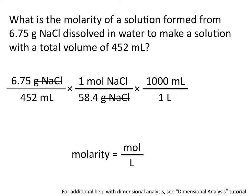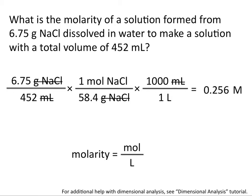We know that 1,000 milliliters are in one liter. By writing 1,000 milliliters on the top, this allows us to cancel out milliliters, and leaves us with units of moles on the top and liters on the bottom, which is exactly what we're looking for when we're trying to calculate molarity. When we solve this calculation, we'll find that the molarity of this solution is 0.256 moles per liter, or 0.256 molar.